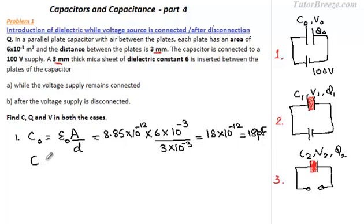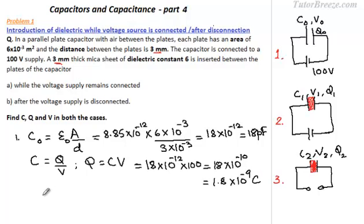We know that capacitance C equals Q divided by V, and since the voltage across this capacitor is 100 volts, the charge Q equals C times V. Plugging in the values, this works out accordingly. So for the first case: capacitance is 18 picofarad, charge Q0 is 1.8 × 10⁻⁹ coulombs, and voltage V0 is 100 volts.